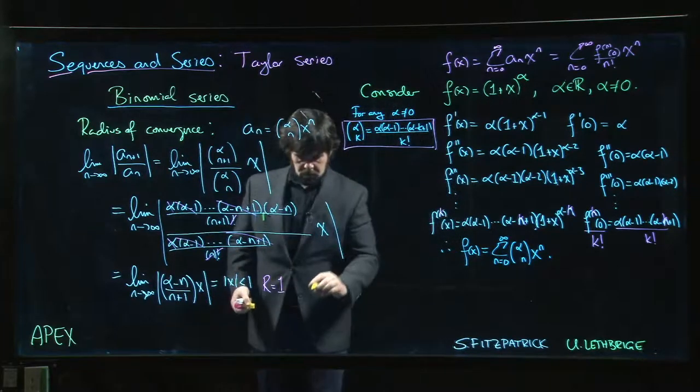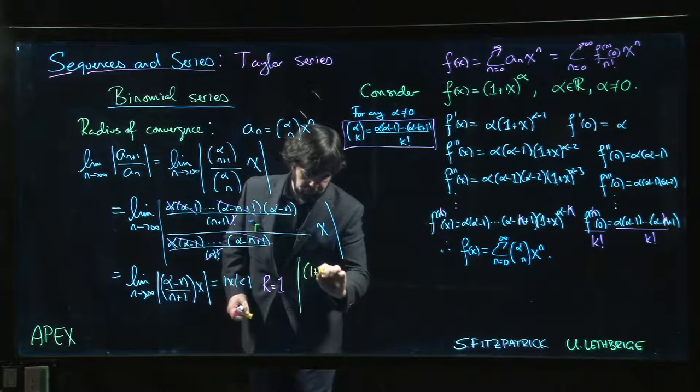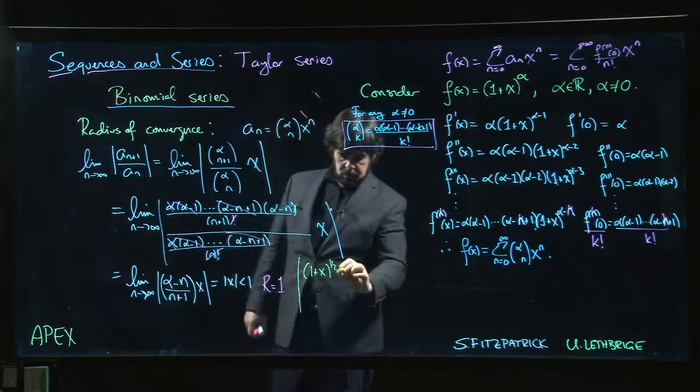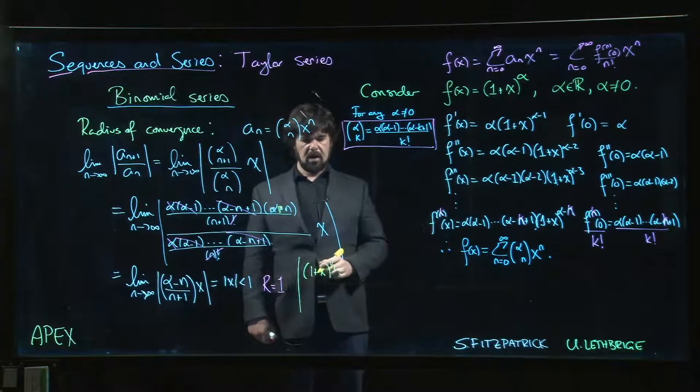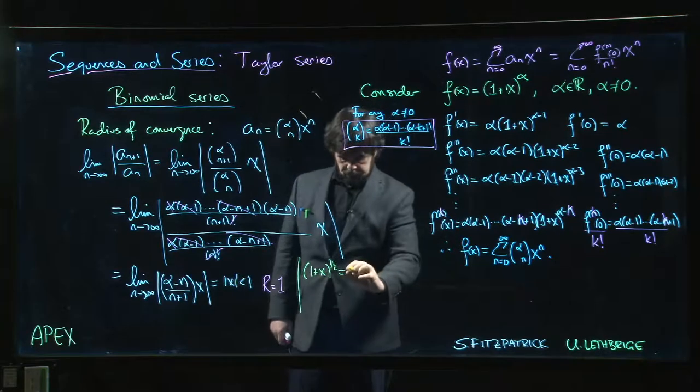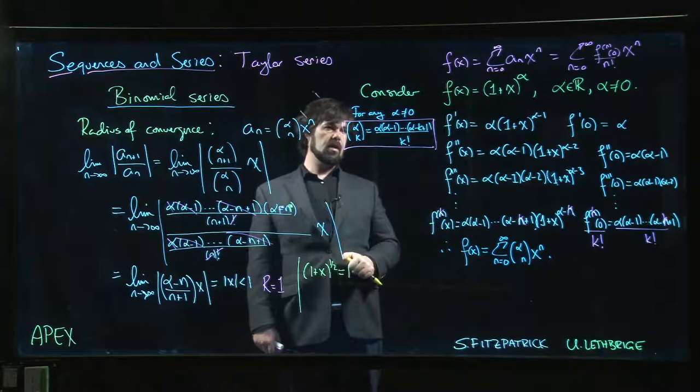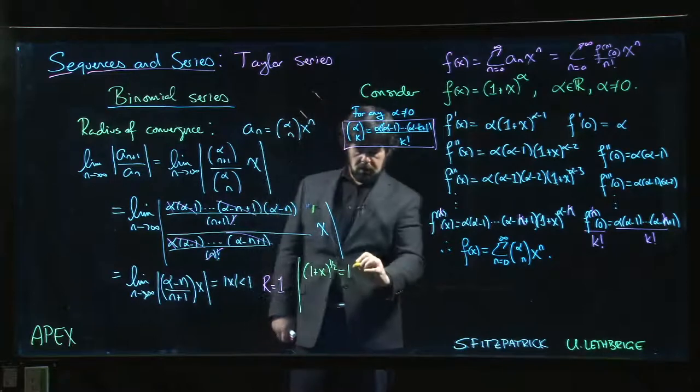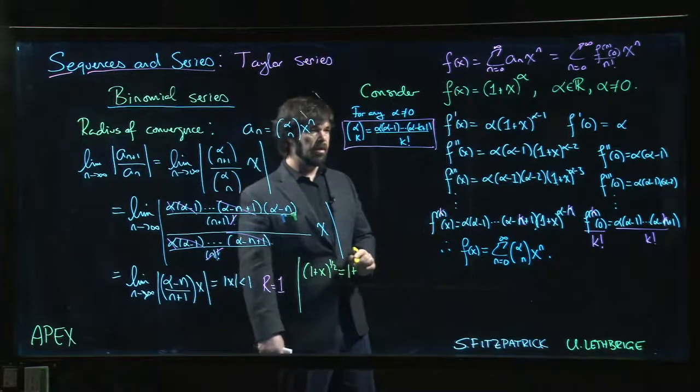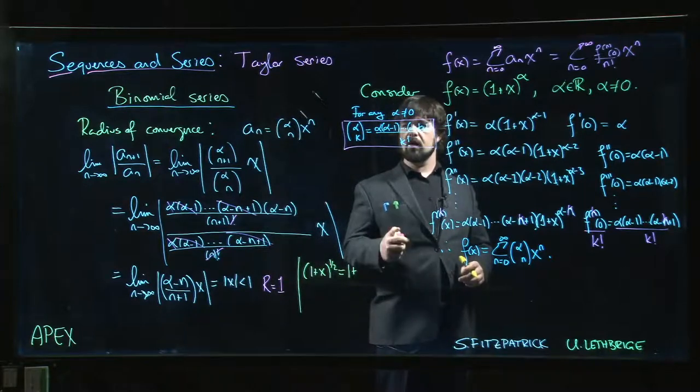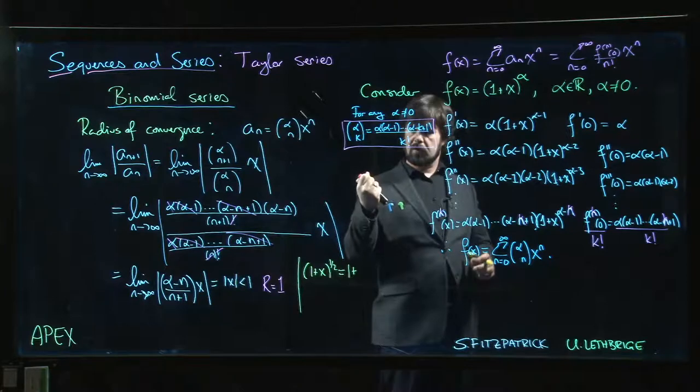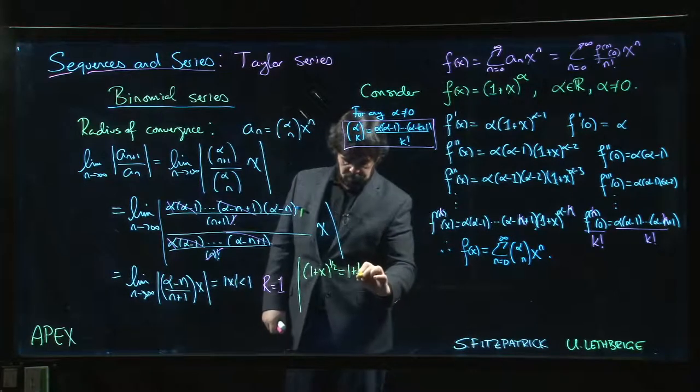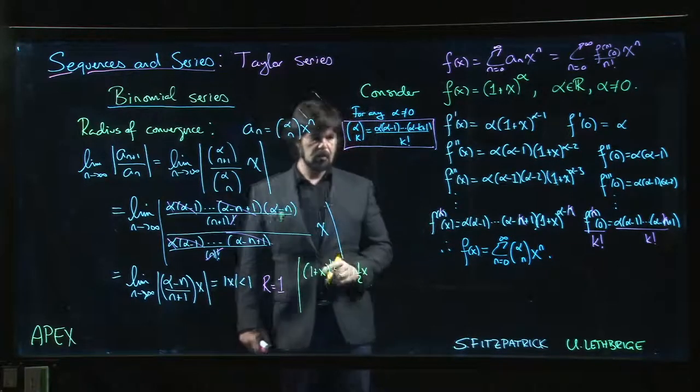What does that look like? Well, (1+x) to the 1/2 should be 1. So the first term here is still going to be just 1. It's still 1, 1 plus - so when k is equal to 1, what do you get? When k is equal to 1, you just get alpha. You just get alpha over 1, you get alpha. Alpha in this case is 1/2. So 1 plus (1/2)x.